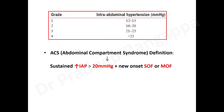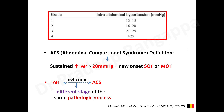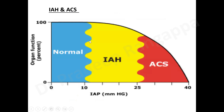We call it abdominal compartment syndrome when there is a sustained increase in intra-abdominal pressure more than 20 mmHg with new onset single or multi-organ failure. Intra-abdominal hypertension is not the same as abdominal compartment syndrome, but they represent different stages of the same pathological process — sustained increase leading to circulatory compromise, microcirculatory hypoperfusion, and organ dysfunction defines ACS.